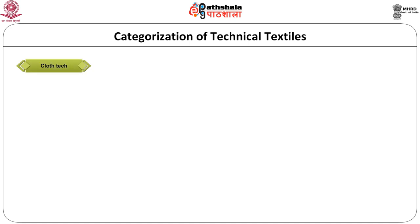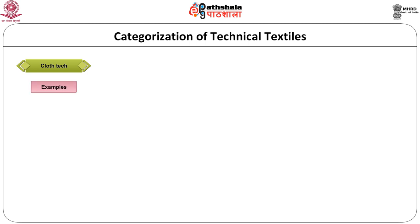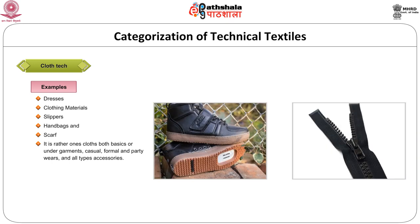The next category is cloth textiles. This includes fibers, yarns, fabrics used in the field of clothing and accessories for personal grooming. This is represented by a t-shirt without a collar. Cloth textiles include items like dresses, materials, slippers, handbags, which are used for casual wear, formal wear, party with all types of accessories. You can see two simple pictures which show a velcro tape in a shoe and a zip in a jacket.